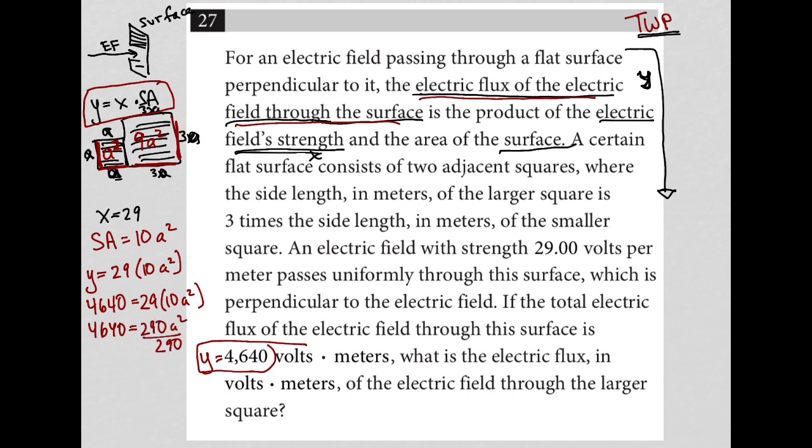I can divide both sides by 290. And in my calculator, 4640 divided by 290 is 16. So I get 16 equals A squared. And of course, I can square root them and get A is equal to 4,